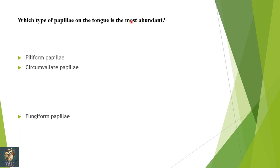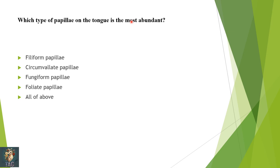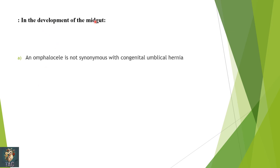Next: which type of papillae on the tongue is most abundant — filiform, circumvallate, fungiform, foliate, or all of above? Please remember: filiform papillae are the most abundant on the tongue, they are the only type that are keratinized, and the only type that do not have taste buds. All other three types are covered by non-keratinized stratified squamous epithelium and all three have taste buds. Correct option is A.